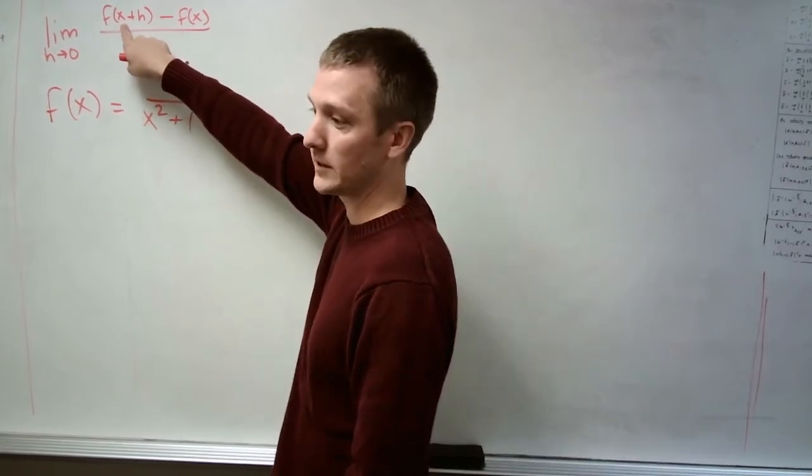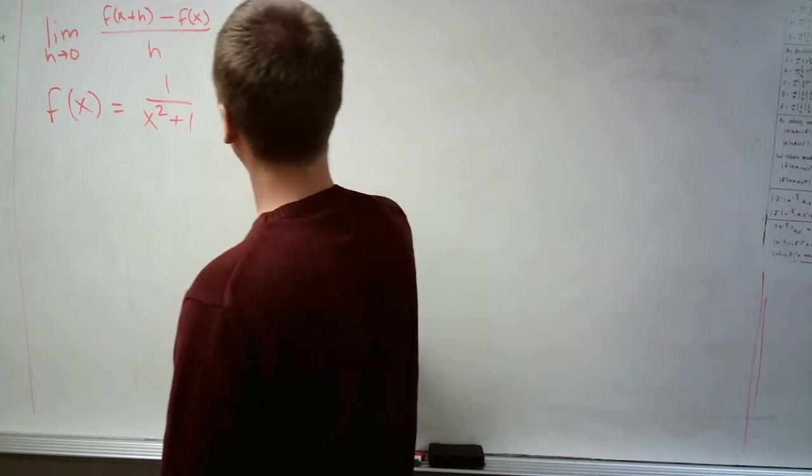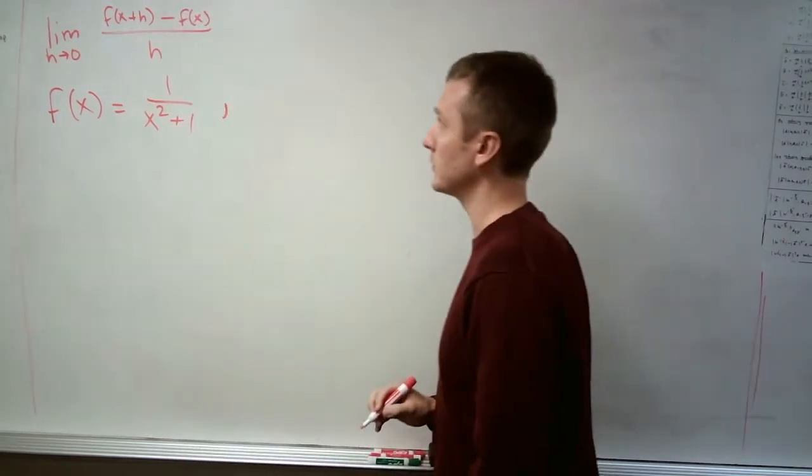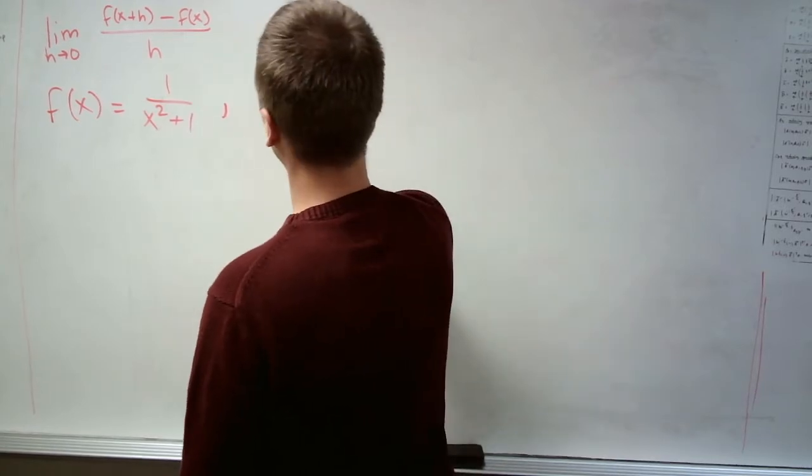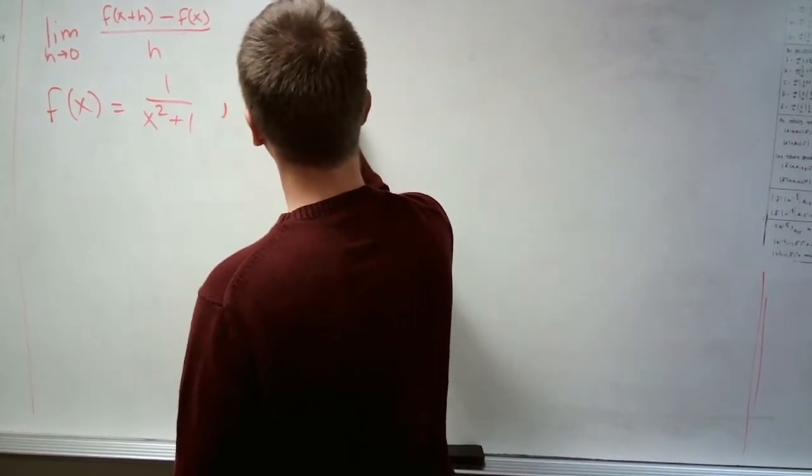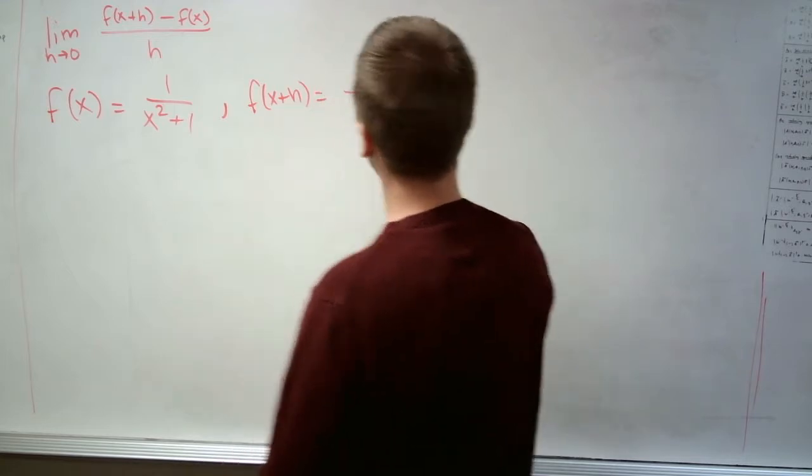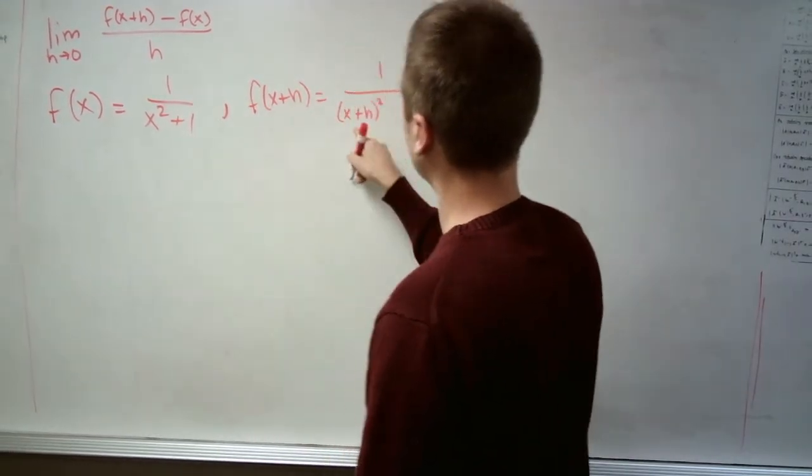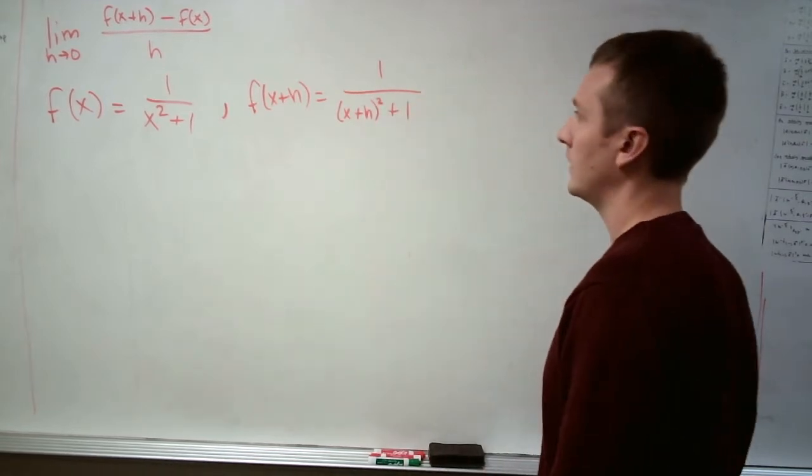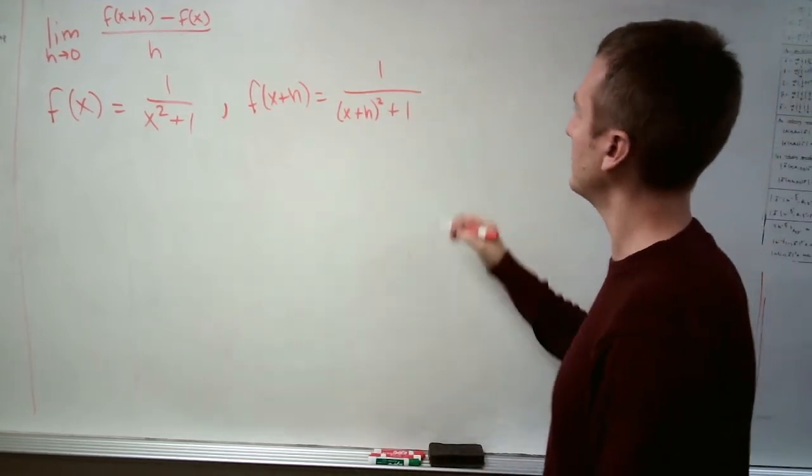Which is really just x plus h composed into f. So we'll write that down as well. We're going to put x plus h instead of x, still 1 over x plus h instead of x.